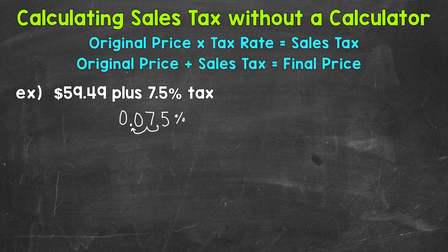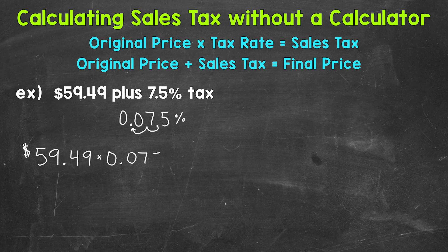Once we have that, we can multiply our price by that decimal, and that's going to give us 7.5% of $59.49. So let's multiply our original price by the tax rate in decimal form. We have 5949 times 0.075, and I'm going to go to the right in order to solve this. When we multiply decimals, we can take the decimals out and then place the decimal in our answer at the end.